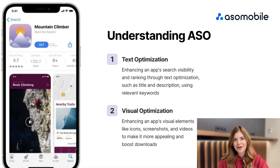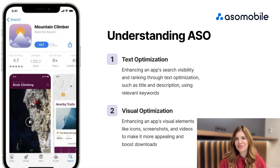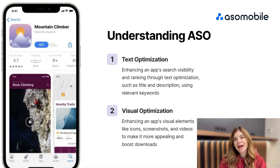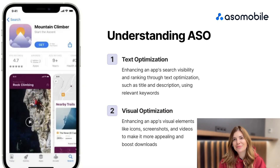Visual ASO enhances an app's visual elements like icons, screenshots, and videos to make it more appealing and boost downloads. Both visual ASO and text ASO are crucial for app promotion. However, today we will focus on text ASO and increasing the app's visibility in search.